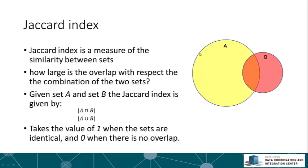Here we can see on the right an illustration of this. Let's say we have two sets, A and B. A is a big yellow circle and B is a smaller red circle. You can read this like a Venn diagram. Everything that is yellow belongs only to set A, all those genes in the red region belong only to set B, and the intersection of the two circles represents genes that belong to both sets.